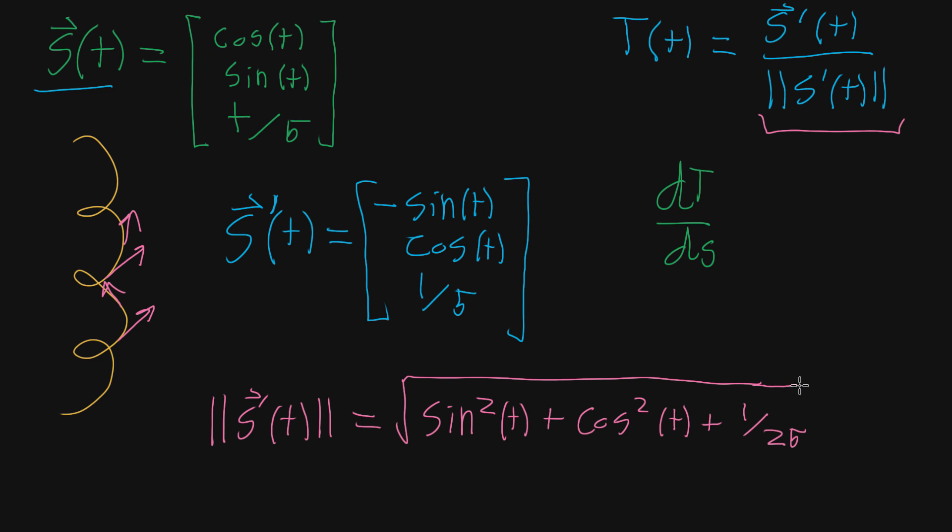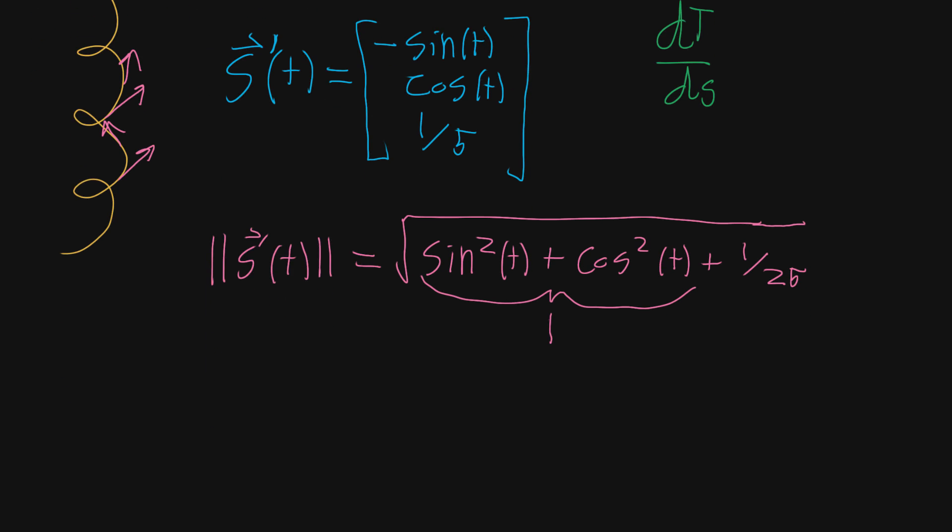You might notice I use a lot of sine-cosine pairs in examples, partly because they draw circles, but also because things simplify nicely - sine squared plus cosine squared equals one. So this entire formula boils down to the square root of one plus one divided by 25.